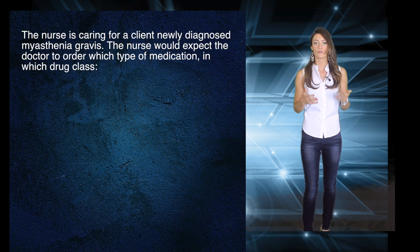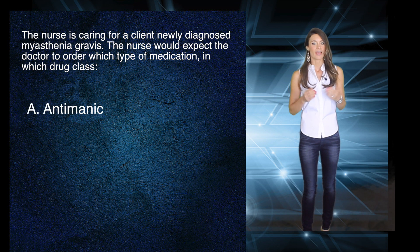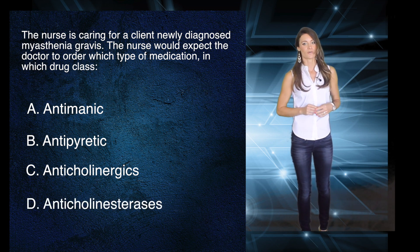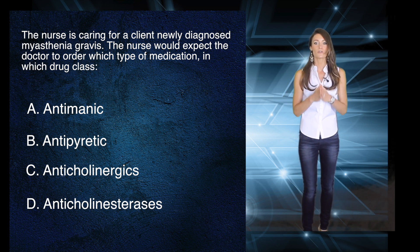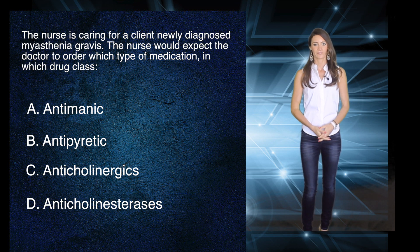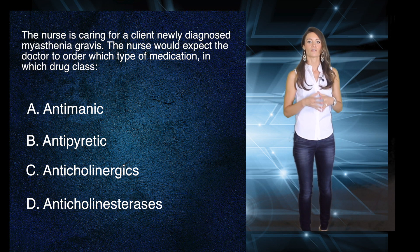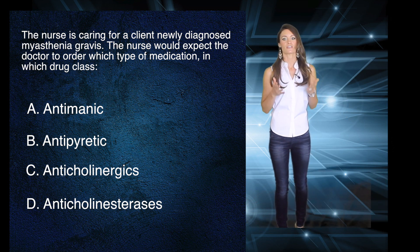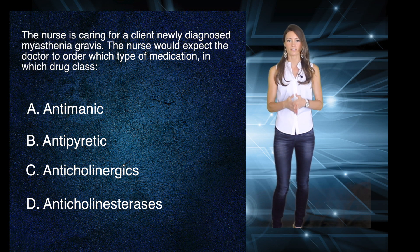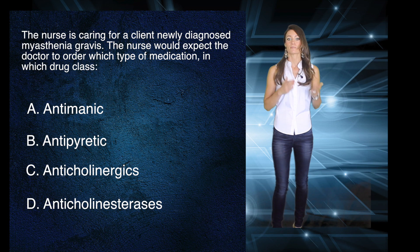Next question: The nurse is caring for a client newly diagnosed with myasthenia gravis. The nurse would expect the doctor to order which type of medication? A) Anti-manic. B) Antipyretic. C) Anticholinergics. Or D) Anticholinesterase. Anti-manic is used for bipolar and manic depressive disorder. Antipyretic reduces fever. Anticholinergics block the neurotransmitter. And anticholinesterase — an acetylcholinesterase inhibitor — inhibits the acetylcholinesterase enzyme from breaking down acetylcholine. This is the exact medication class for myasthenia gravis and needs to be committed to memory, as this can be confusing.